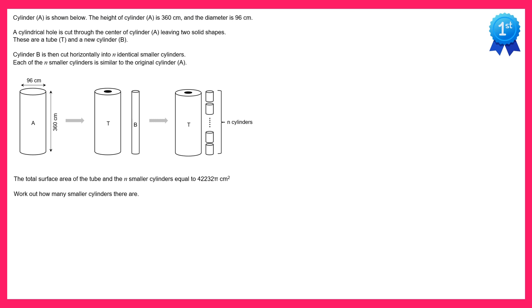Let's take a closer look at cylinder A. We know its diameter, that's 96. The radius must be half of this, so 48, and the height is 360.